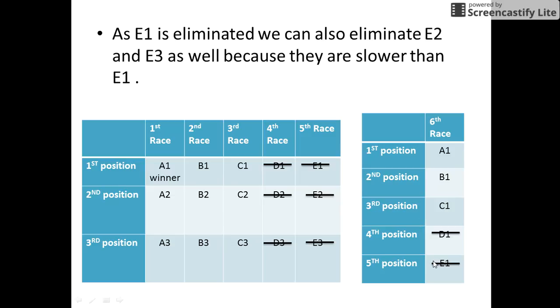Again, on similar grounds, since E1 is eliminated in the sixth race, so are E2 and E3 since they are slower than E1.